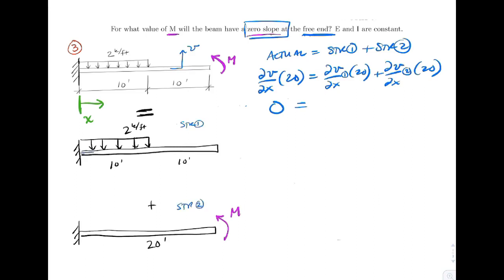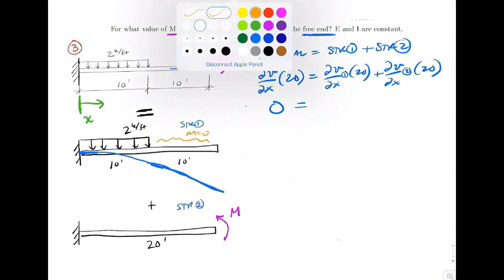So I'm going to go ahead and just draw the deflected shape. We've got a beam that's going to bend. Zero deflection, zero slope at the wall. We've got negative moment. The load is pushing down. And then we end up with a straight line beam after 10 feet. Out here we have zero moment in the beam over those last 10 feet.